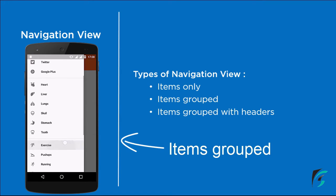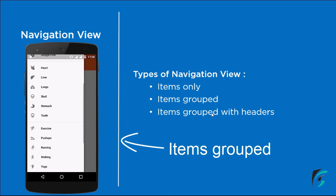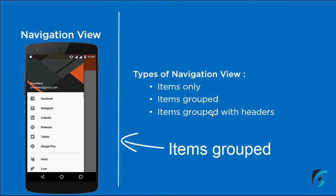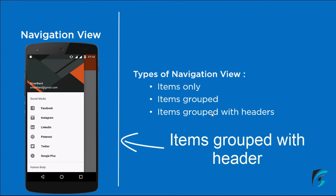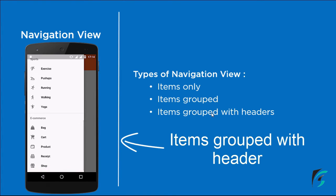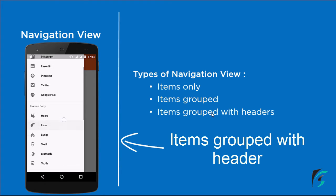This is the demo application for Items Grouped. We can see the items being grouped into their respective categories — the social networking sites, the organs in the human body, the exercises, and various other items. The third type of Navigation View is Items Grouped with Header. On the left side of the screen, we can see each of the grouped items provided with their respective headers.